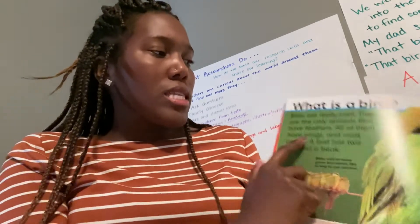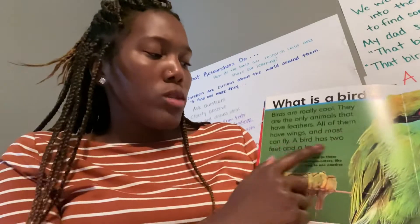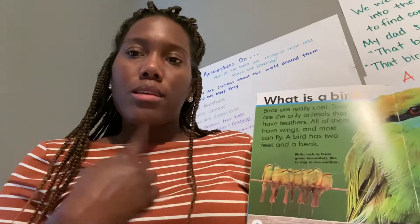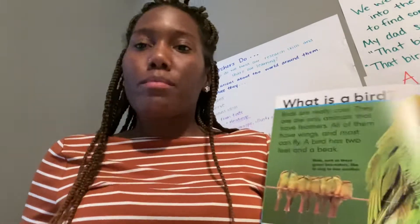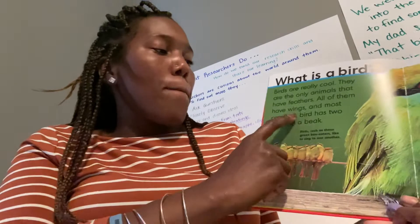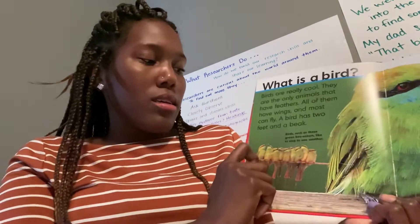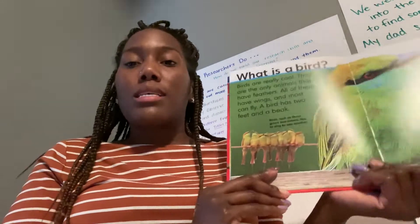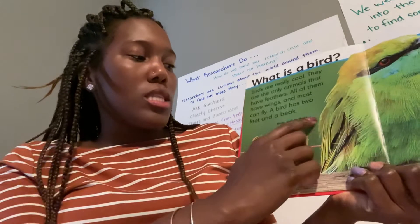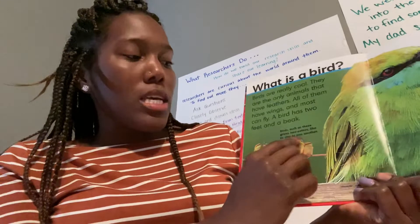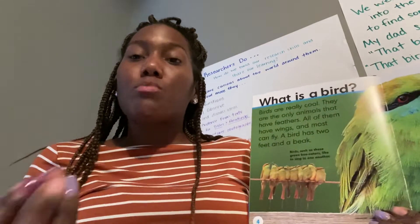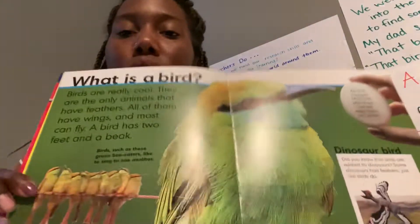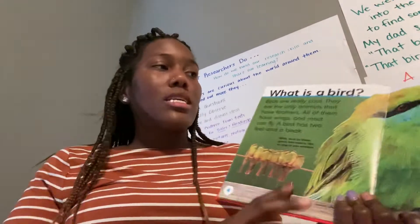I want to go back to that sentence. It says all of them have wings and most can fly. What does that mean? It means that all birds have wings, but not all of them can fly. So just because you have wings doesn't mean you can fly. A bird has two feet and a beak. There's some small writing here — that's called our caption. We saw that in our book Just Ducks. It says: birds such as these green bee eaters like to sing to one another. So that's giving us a little bit more information on a specific bird — these birds are called green bee eaters and they like to sing to one another.